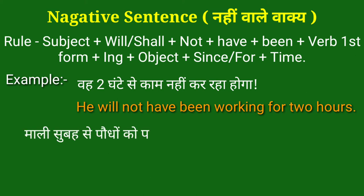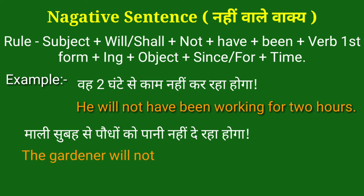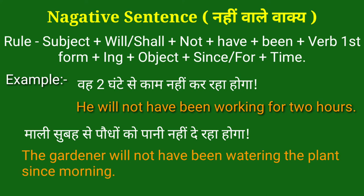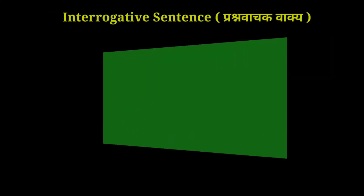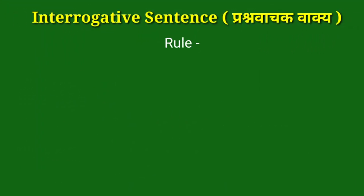Second example: माली सुबह से पौधों को पानी नहीं दे रहा होगा। — The gardener will not have been watering the plant since morning. इसमें 'the gardener' subject है, 'will have been' helping verb है, 'not' नहीं के लिए प्रयोग किया गया है, 'watering' verb की first form + ing है, बाकी हमारा object है।